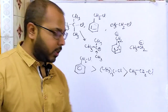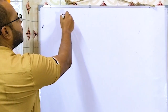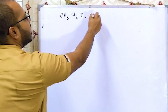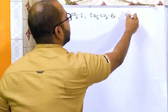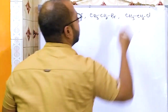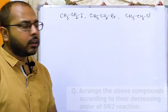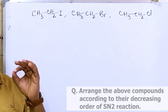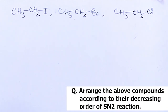Next question: the compounds given are CH3CH2I, CH3CH2Br, and CH3CH2Cl. We have to arrange them according to their decreasing order of SN2 reaction rate.